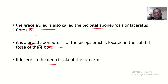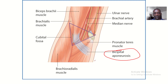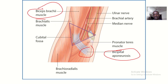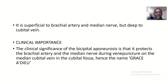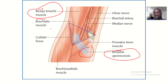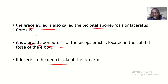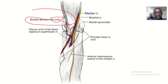The grace adieu inserts in the deep fascia of the forearm. It is like an aponeurosis — a continuation ending of the biceps brachii muscle — and it inserts into the fascia of the forearm. It is superficial to the brachial artery and the median nerve, but it is deep to the median cubital vein. So the cubital vein lies on top of the bicepital aponeurosis, while the brachial artery and median nerve are underneath it.